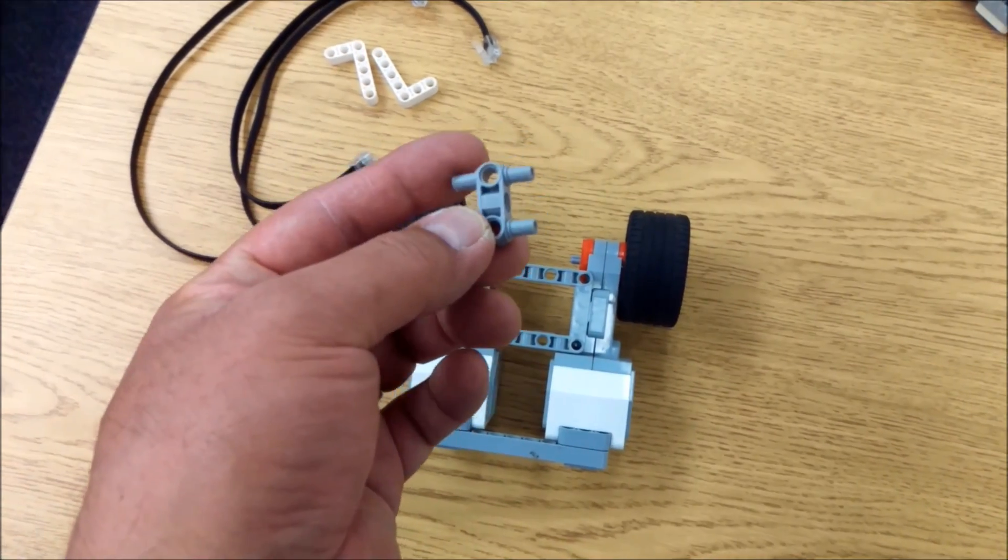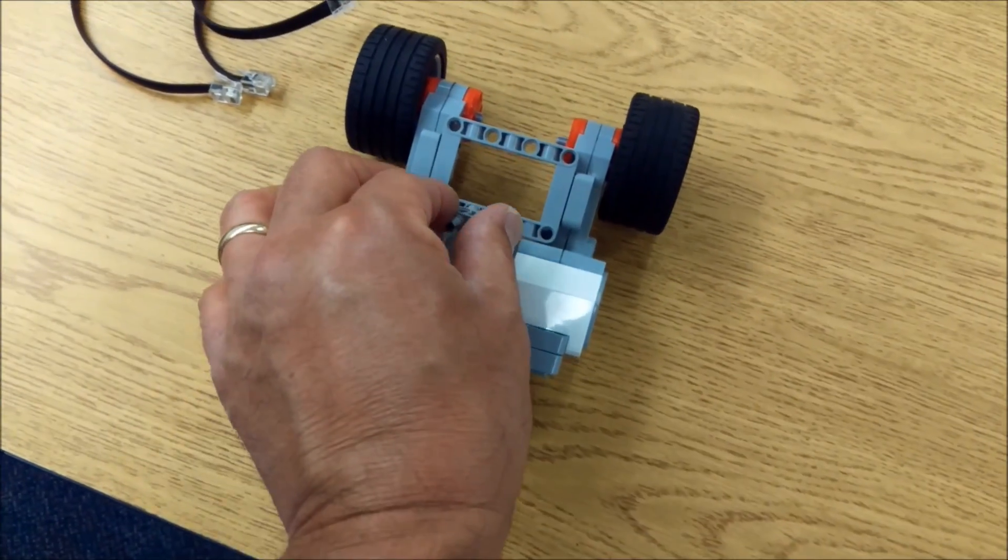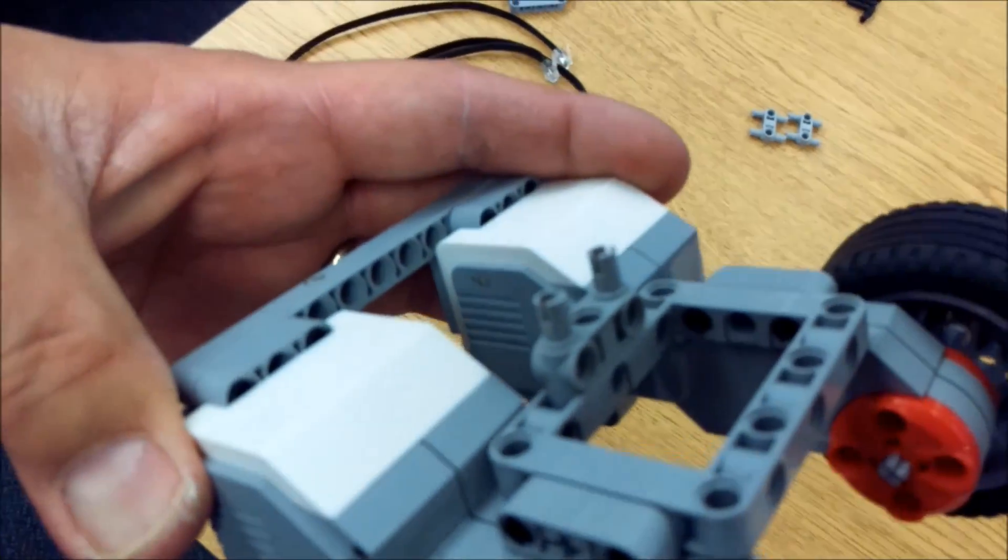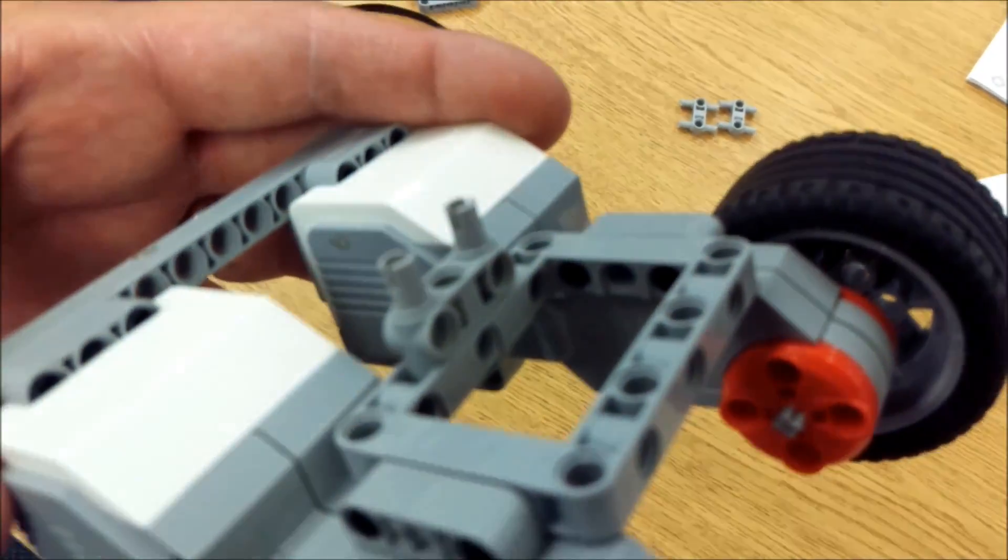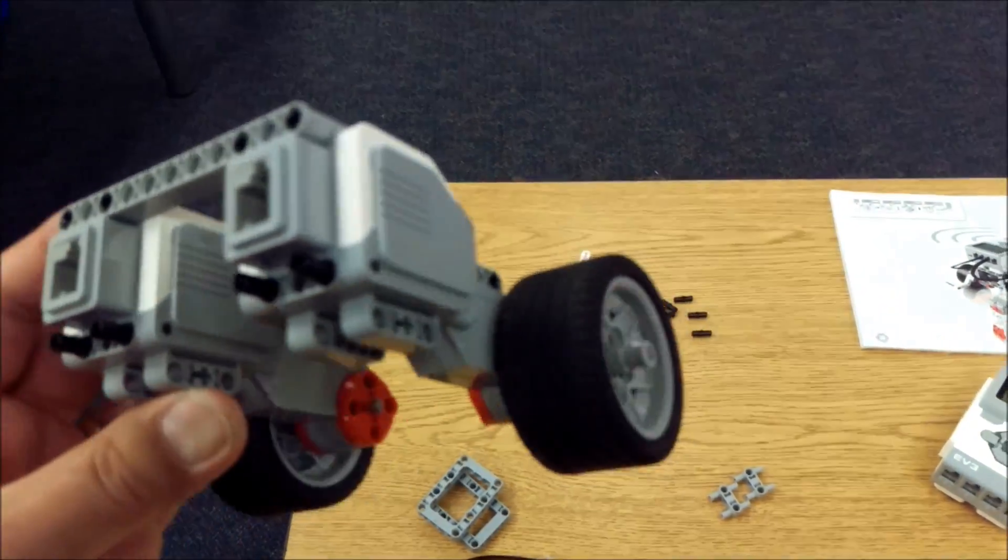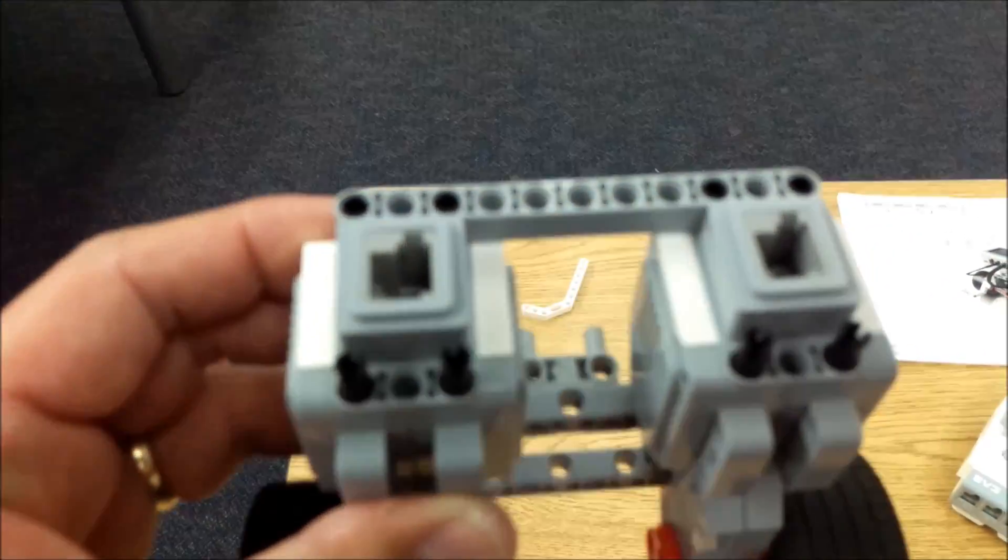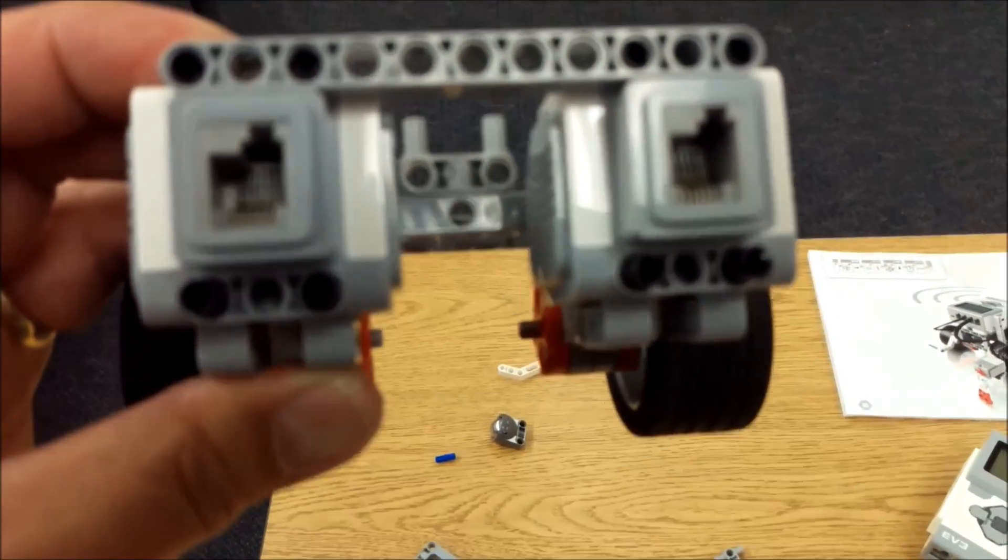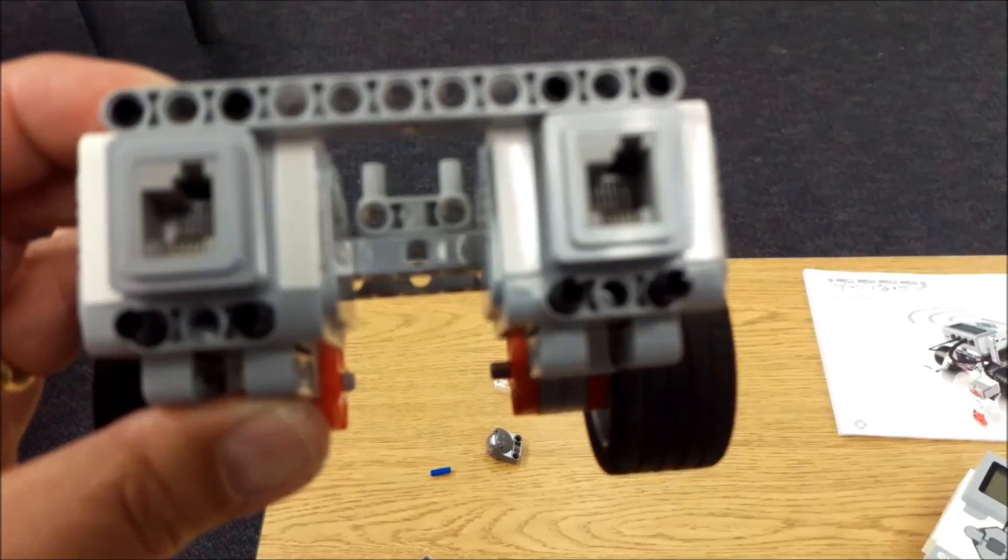And then I'm going to take one of my gray H pieces here and place it like so there in the front. Okay, now I'm looking at the back of the robot. I am now going to put in four more black connectors into the bottom of the large motor like that.